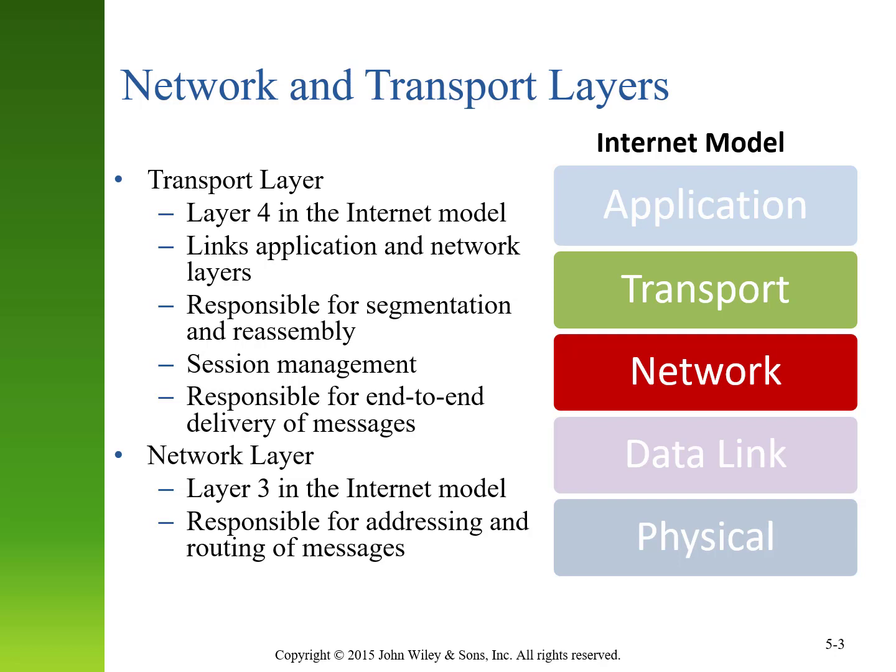The network layer is layer 3. It's responsible for addressing information — how we get a message from a specific device to another specific device on another network. It's also responsible for routing messages, or deciding which path we're going to take to get a message from one place to another.